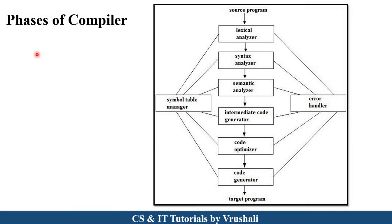The next important point is phases of compiler. From an exam point of view, this is one of the most important questions. In your exam, they will ask you to explain phases of compiler. At that time, you need to draw this diagram and explain all the phases with examples. The source program is converted into the target program or machine language by using these six compiler phases: lexical analyzer, syntax analyzer, semantic analyzer, intermediate code generator, code optimizer, and code generator. The generated information is stored into the symbol table, and any errors generated are handled by the error handler.